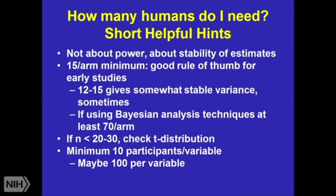If you're doing something like logistic regression or principal components analysis, you usually need a minimum of 10 participants per variable — those are individual participants per variable. And in some cases, you may need 100 per variable in order to get stable estimates. The math will spew out of the computer, but that doesn't mean the functions are stable.